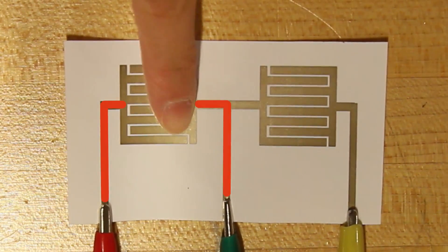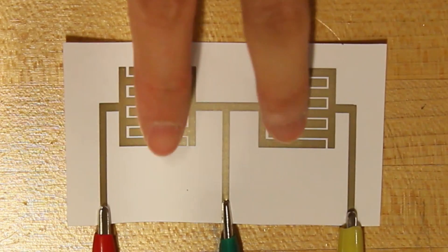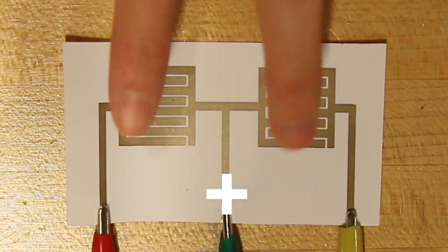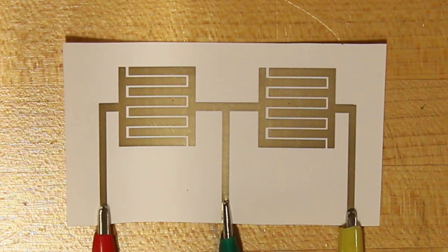If both electrodes are touched, the value adds up. This is because both electrodes act as parallel capacitors. To avoid that the shared wire creates a short circuit between both electrodes, we used an interdigitated design for the electrodes.